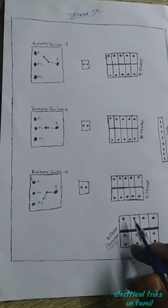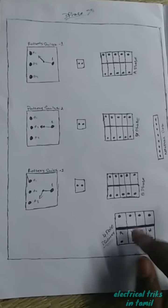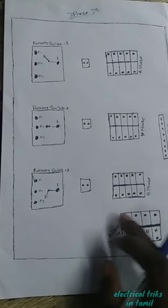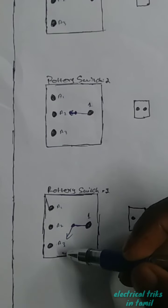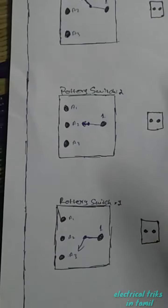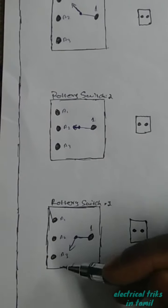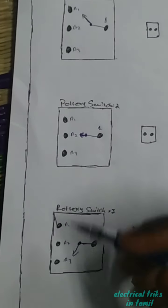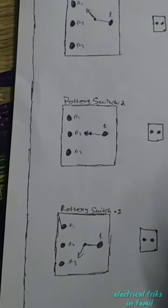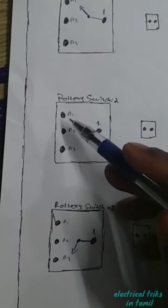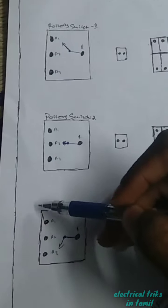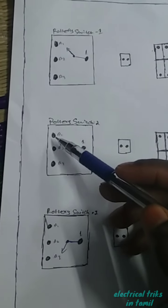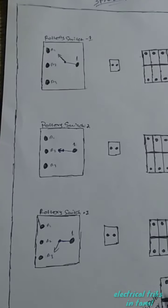R, Y, B phases are shown here. The isolator output connects to the DB bus. R, Y, B terminals A1, A2, A3 are labeled. The 3-rotor switch connects R, Y, B phases through to the terminals.